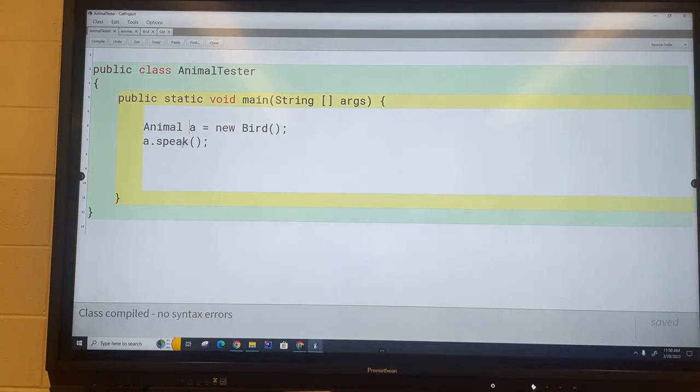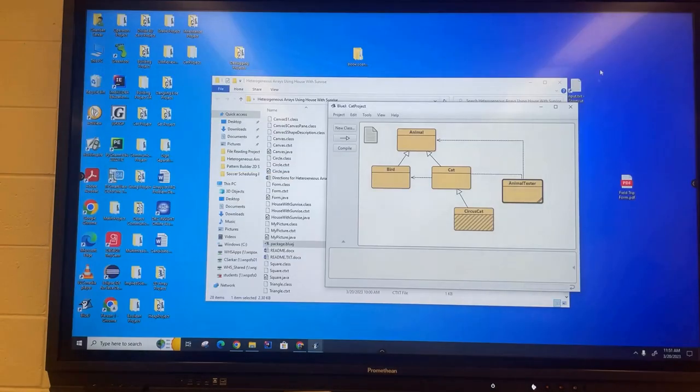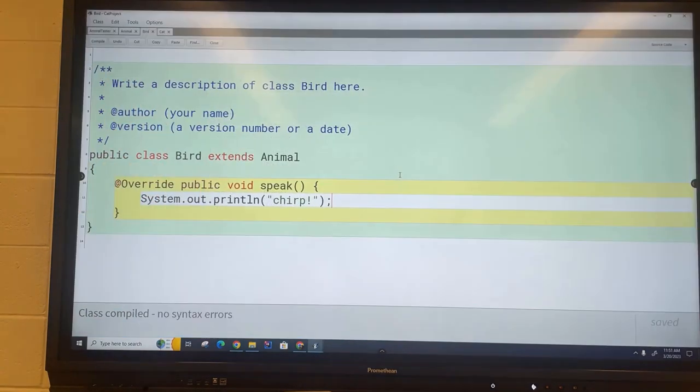This is topic number 7 on the board here called polymorphism, the whiteboard over there, and that's going to be the topic for a different day. What I want to talk about today is a slightly different topic. Let's go back to our bird class and I'm going to put in a fly method here.